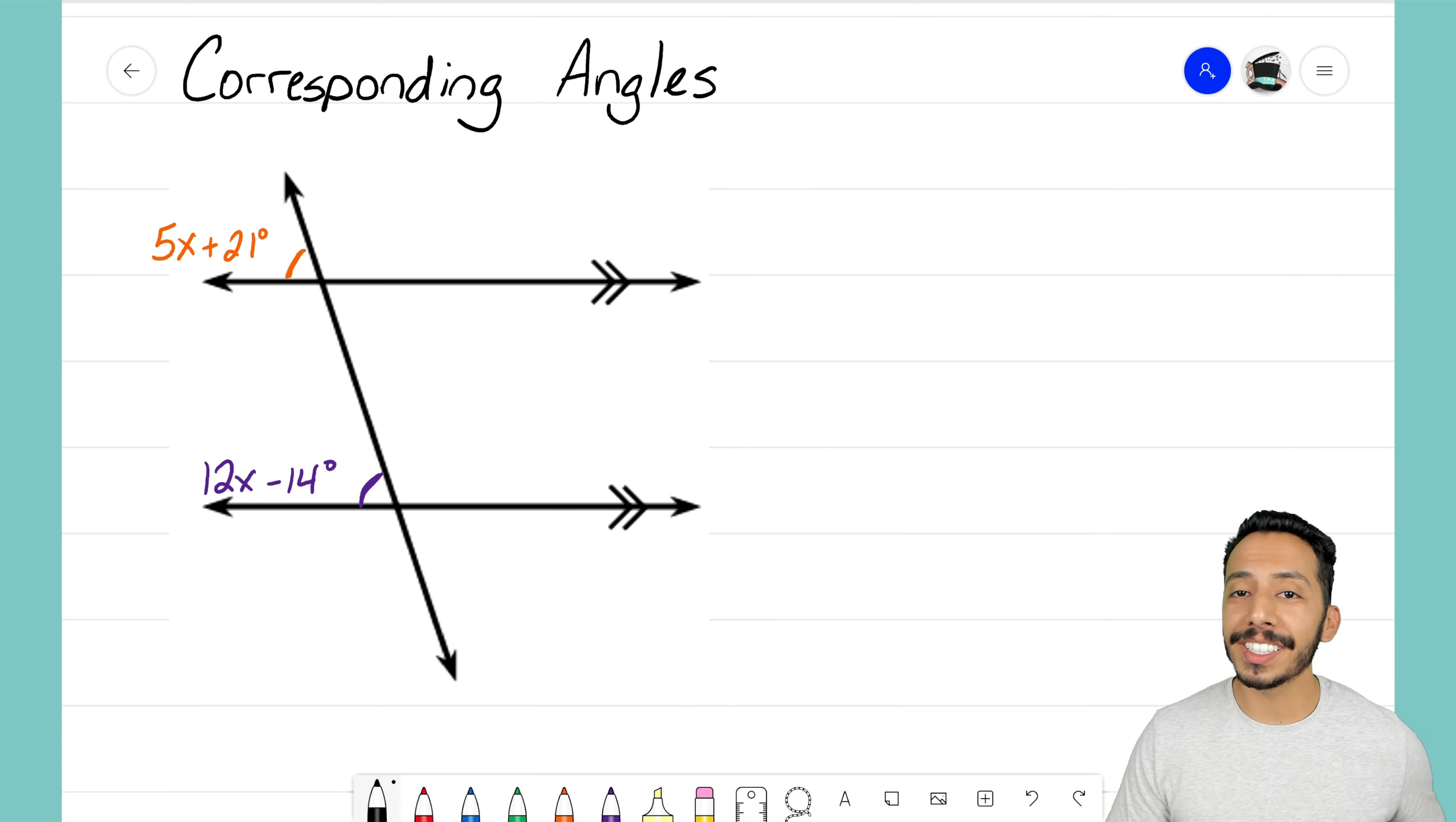Let's go ahead and jump right into this example problem where I see that I have two parallel lines right there, those two horizontal parallel lines. I know that they're parallel because of those markings right there telling me that those two lines go on and on forever, never intersecting.